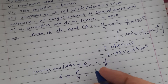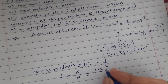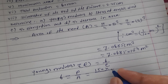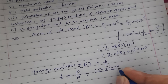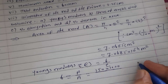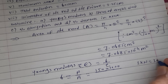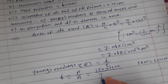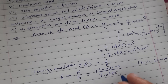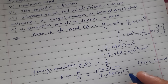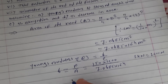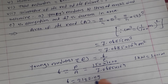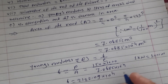The load given for the extension calculation is at 150 kilonewton — that is the load you have to use. Since 1 kilonewton equals 1000 newton, we use 150 into 1000, divided by the area 7.0685 into 10 raised to minus 4. You get sigma equal to 2122.09 into 10 raised to 4 newton per meter square.